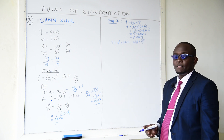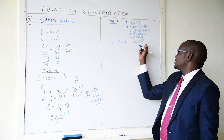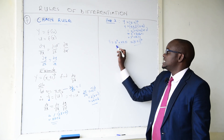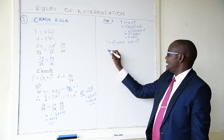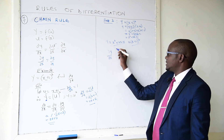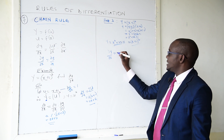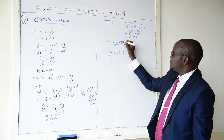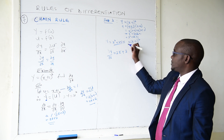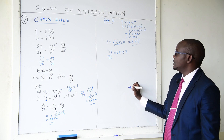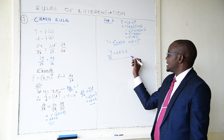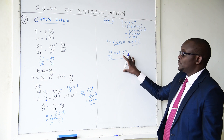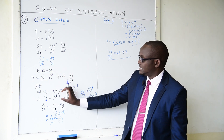Now differentiating y equals x squared plus 2x plus 1 directly: dy/dx equals 2x to the power 1 plus 2x to the power 0, which equals 2x plus 2. This is the same answer obtained using chain rule, proving that the chain rule is correct.